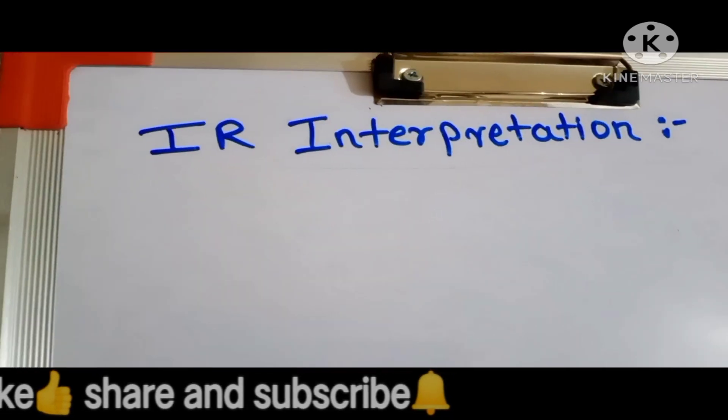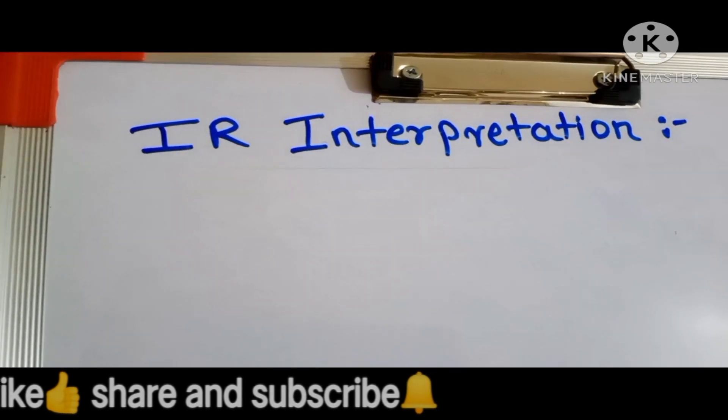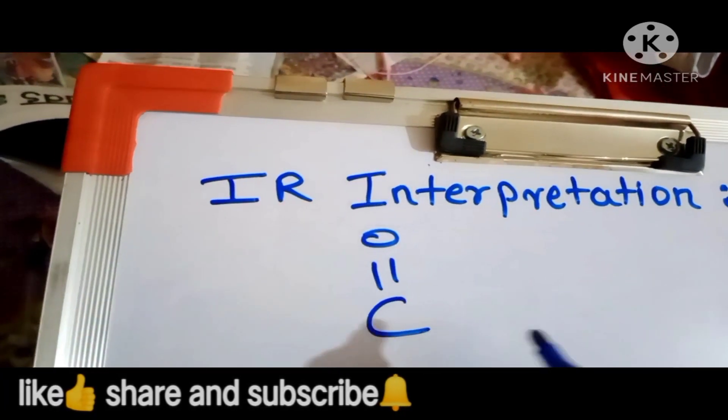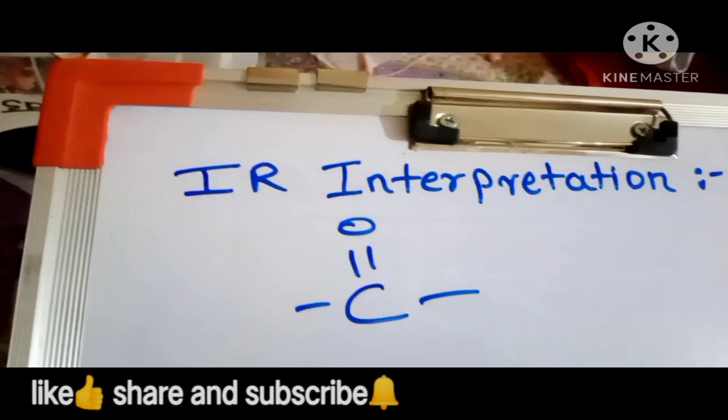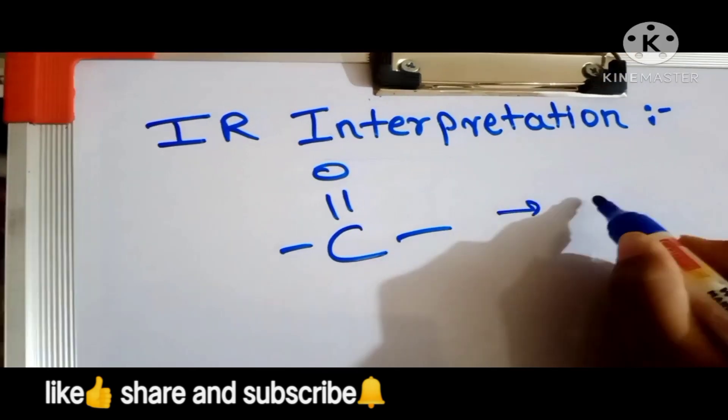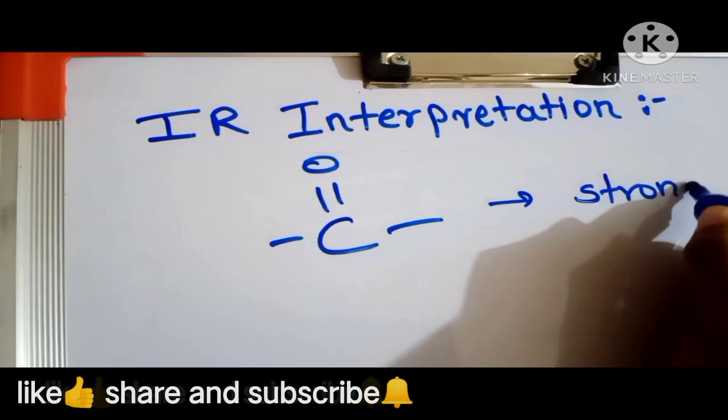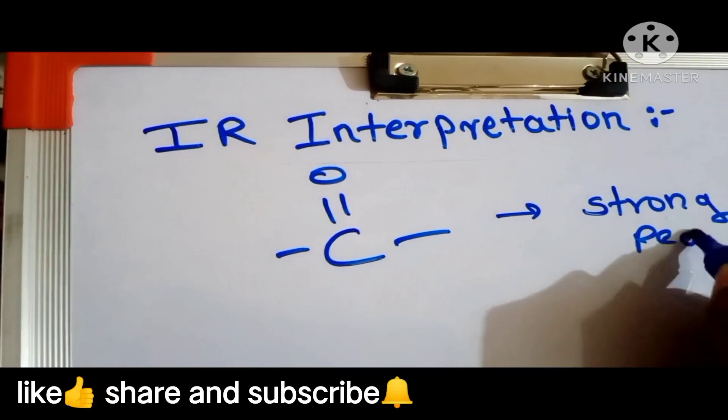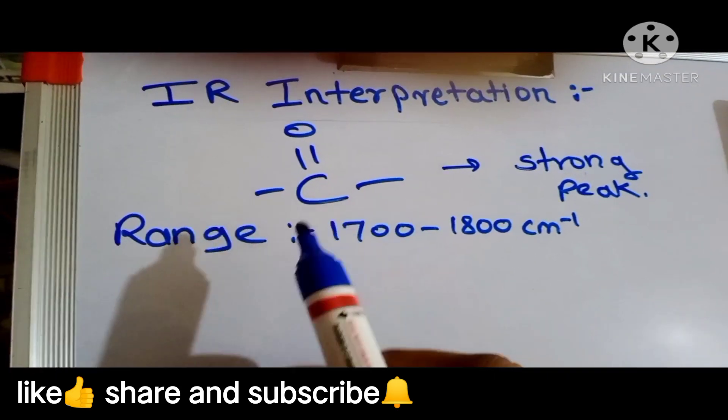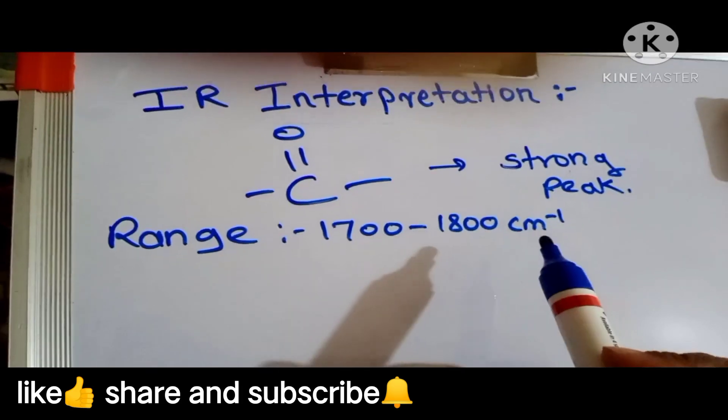Moving forward, see guys, this C double bond O means carbonyl group is very common in many functional groups and it gives a very strong peak. This carbonyl range is about 1700 to 1800 centimeter inverse.